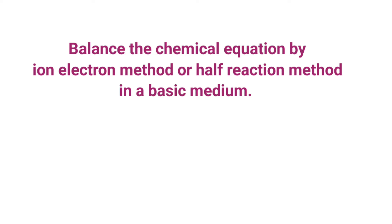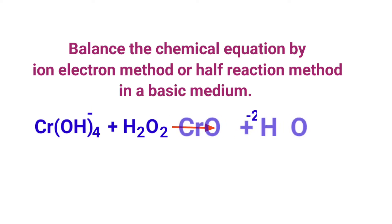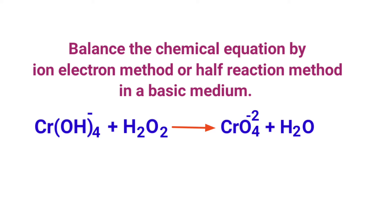Balance the chemical equation by the ion electron method, or half reaction method, in a basic medium. The reaction is: chromium hydroxide ion plus hydrogen peroxide gives chromate ion plus water.